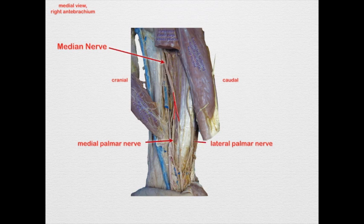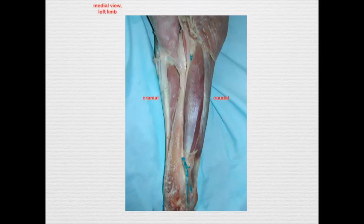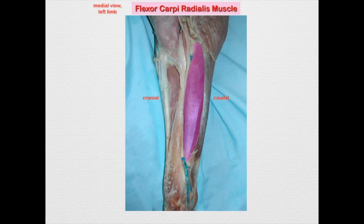We will later follow those down to the distal part of the limb. The muscles it's going to innervate as it passes through the antebrachium: it's going to give off branches to the flexor carpi radialis muscle, as well as the humeral and radial heads of the deep digital flexor muscle.